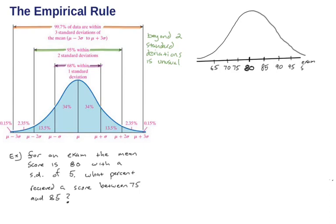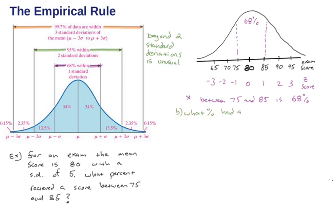We can talk about the x-axis in terms of exam scores or z-scores — 0 in the middle, then 1, 2, 3, and negative 1, negative 2, negative 3. If we want the people between 75 and 85, notice that's one standard deviation in each direction. The empirical rule tells us that's going to be 68% within there, because we're going out one standard deviation in each direction.